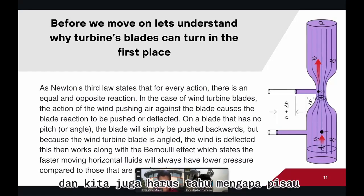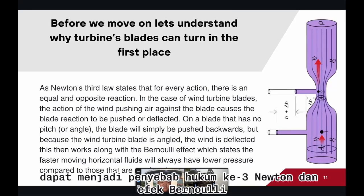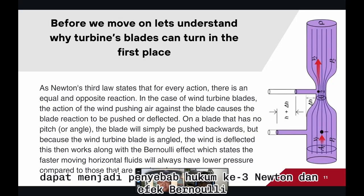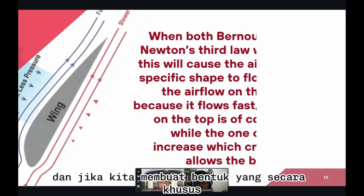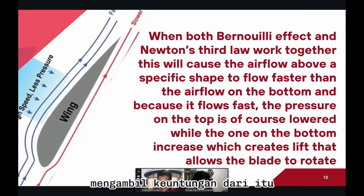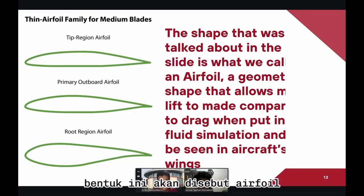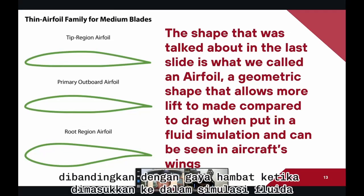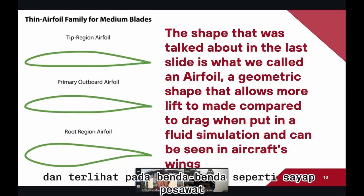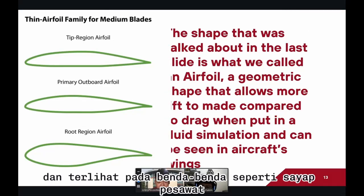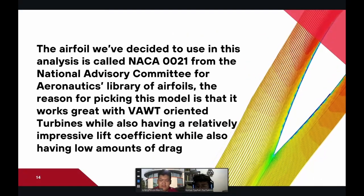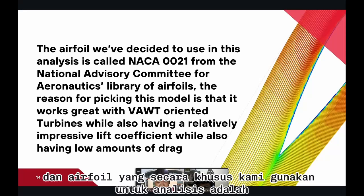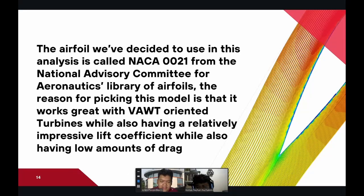We should also know why blades can turn — because of Newton's third law and the Bernoulli effect. If we make a shape that specifically takes advantage of both, this shape will be called an airfoil, which is a geometric shape that allows more lift to be generated compared to drag when put in a fluid simulation, as seen in things such as aircraft wings. Therefore, the specific airfoil we use for this analysis is the NACA 0021.